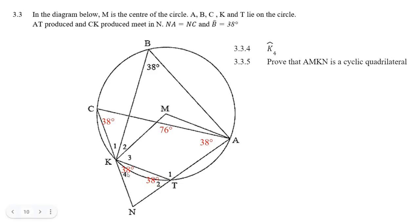And that means K4 must be 38 degrees. So, CAN equals 38, angles opposite equal sides, because NA is equal to NC. And that means K4 must be 38 degrees, the exterior angle of the cyclic quad.